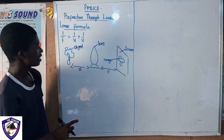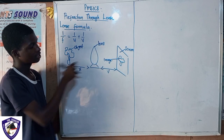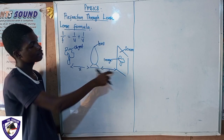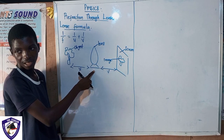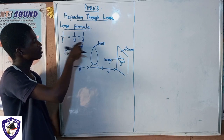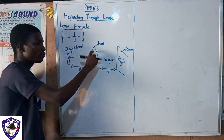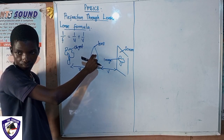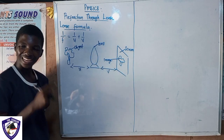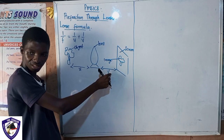The object distance is the distance between the object and the lens. Our v is the distance between the image and the lens. You may be asked to find the focal length, or you may be given the focal length and asked to find the image distance or the object distance.